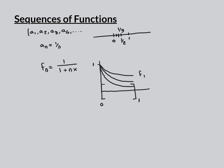Going forward to f2, the second term in the sequence, we put n=2 and get 1 over (1+2x). At x=0 this is still 1 over 1, so it's up at 1. But at the other end of the domain, putting in x=1 gives 1 over (1+2) = a third. So it's lower down.